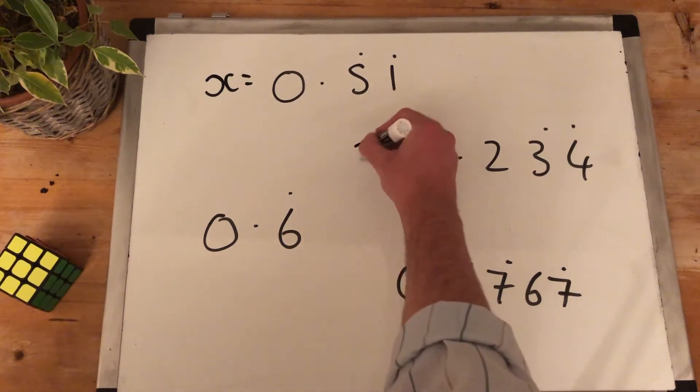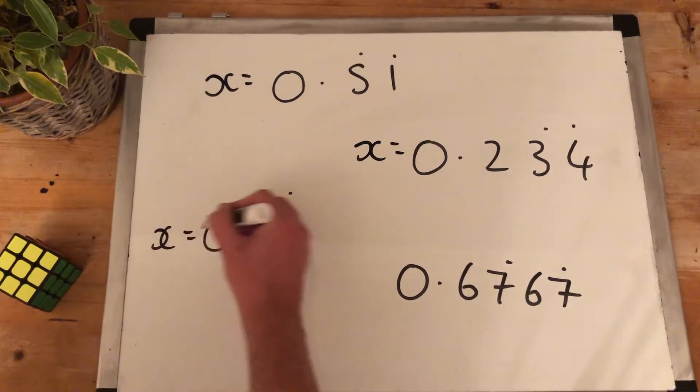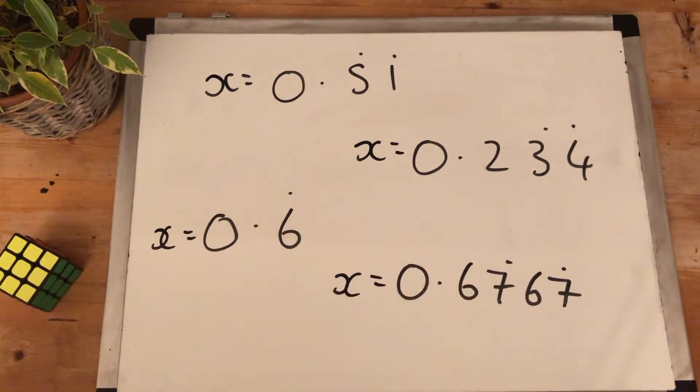What are we going to do for this one? X equals. All we have to do for step one: X equals. Step one: X equals. Nice and easy. Step one, you just do X equals.